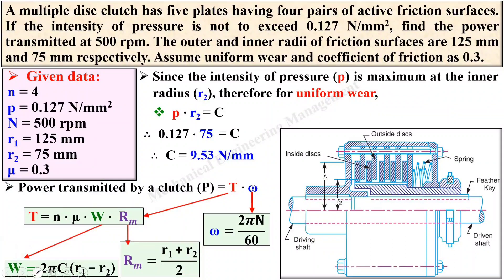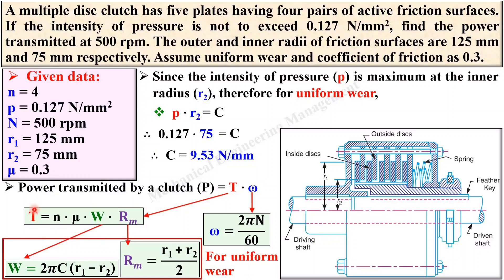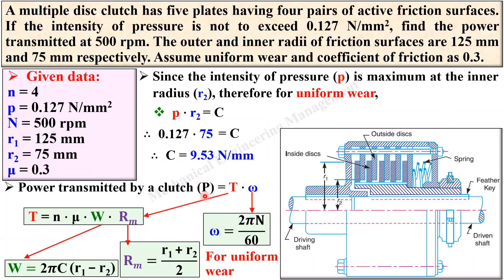Keep in mind that both these equations are only for the uniform wear theory. This is a very simple plan for the given problem. First, you have to find all these parameters so that you can find T, and from T you can find the power at the end.